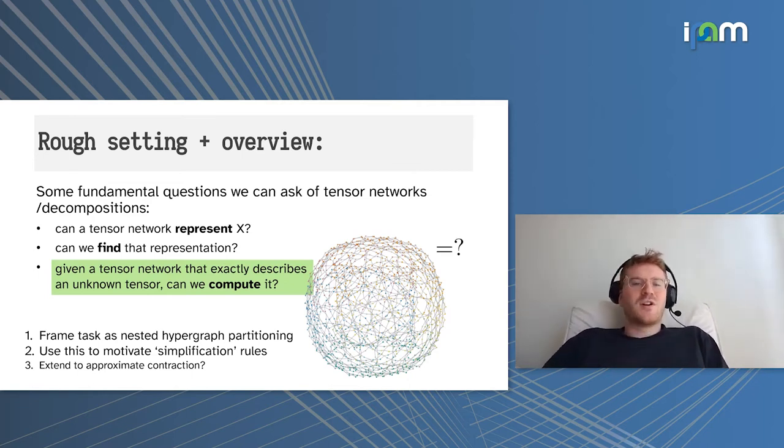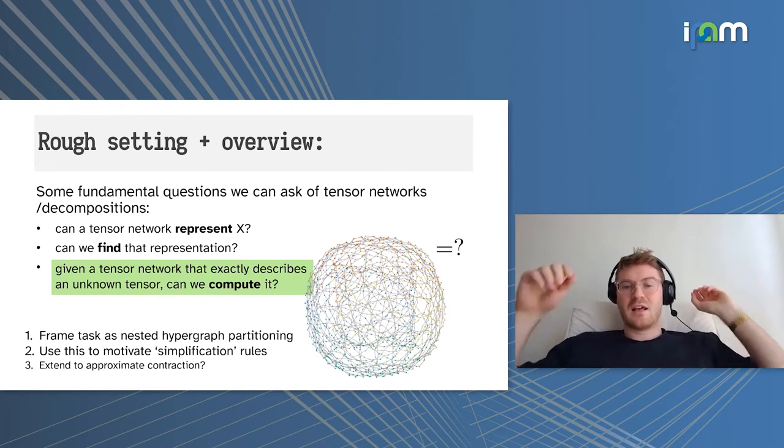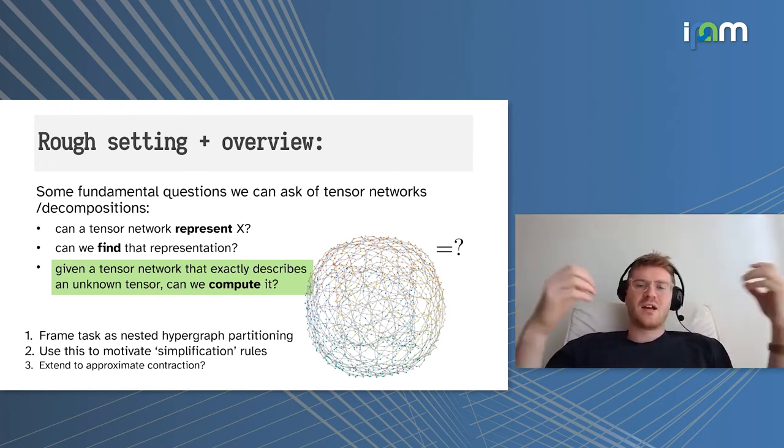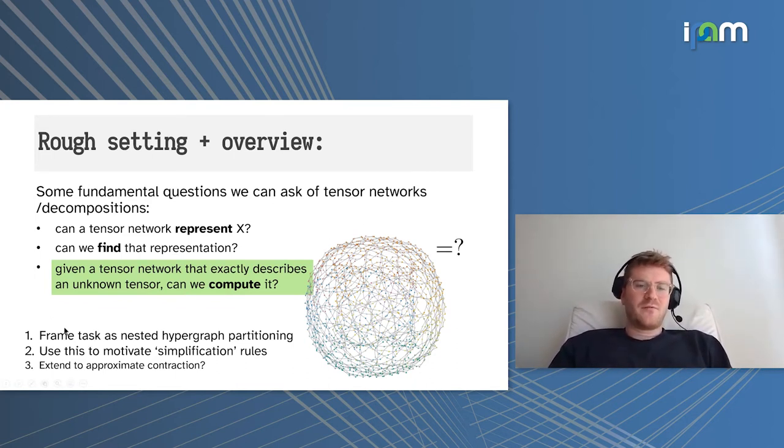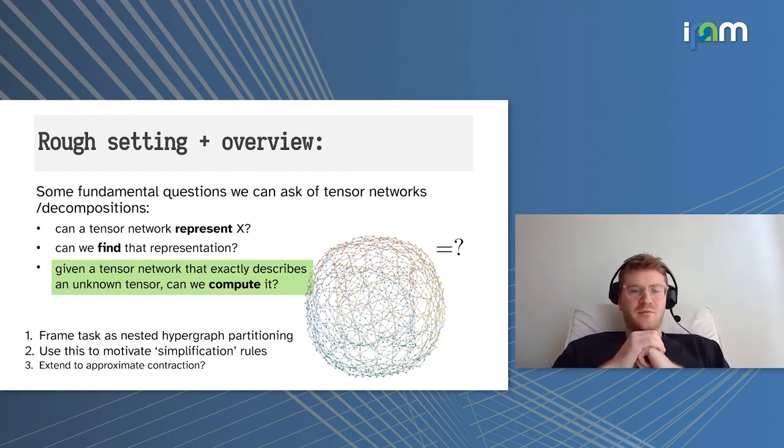But there's also a reverse question, which is if we've constructed a tensor network that we know exactly describes some unknown tensor, can we compute it, can we contract it down to that object? This is a computational approach we're going to take here, where we just try and perform these contractions. We're going to frame this as a nested hypergraph partitioning of a tensor network, and then use that to motivate some of the simplification rules and extend this to approximate contraction.